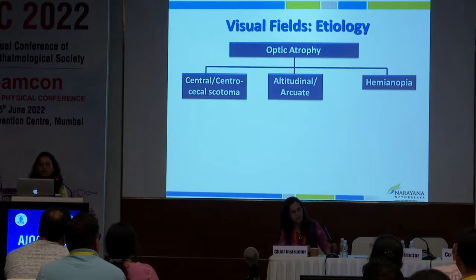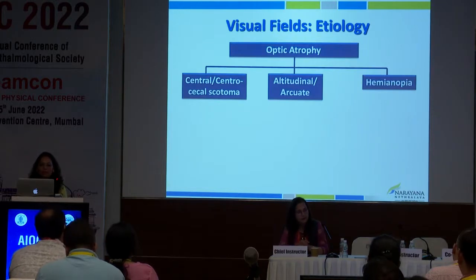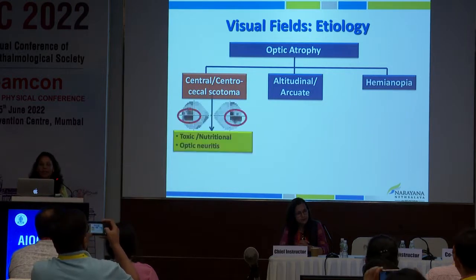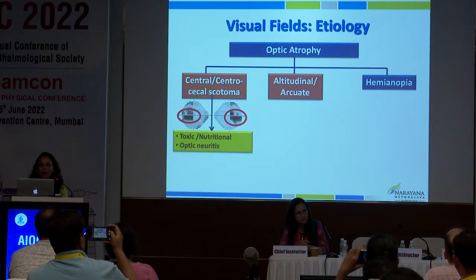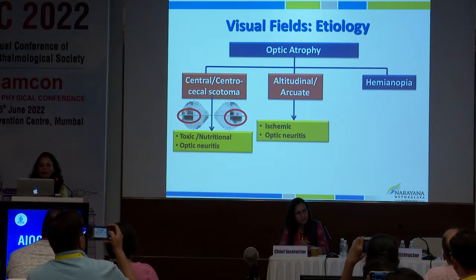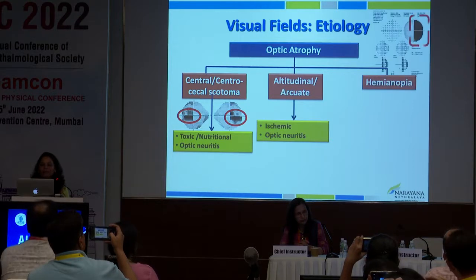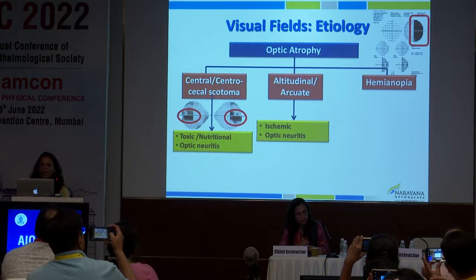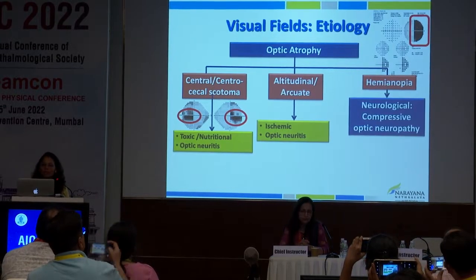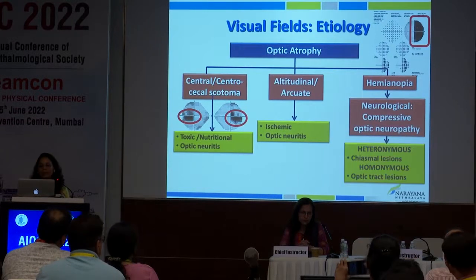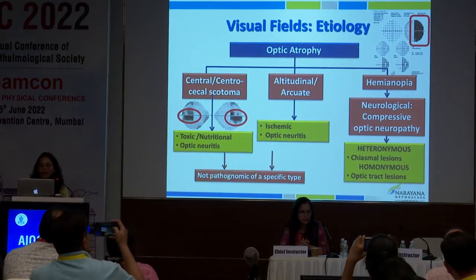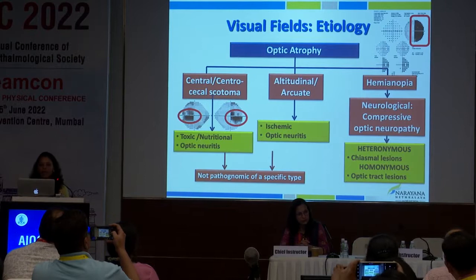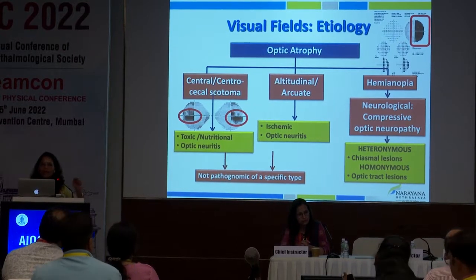In optic atrophy, visual field patterns guide etiology in three ways. Central or centrocecal scotoma suggests toxic or nutritional cause; in one eye, consider optic neuritis. Altitudinal or arcuate defects suggest ischemia, glaucoma, or optic neuritis. Hemianopia respects the vertical meridian and is neurological — compressive optic neuropathy. Heteronymous hemianopia points to a chiasmal lesion; homonymous points to an optic tract lesion. Again, none is pathognomonic — these guide your investigation.